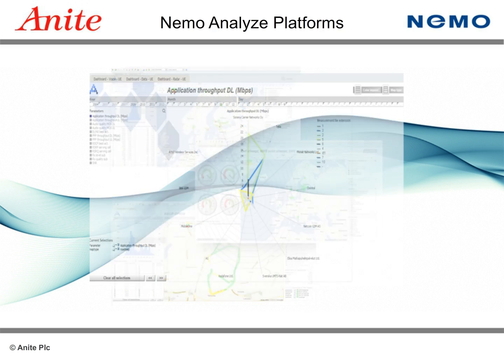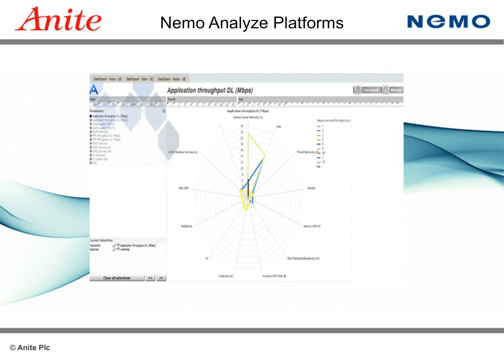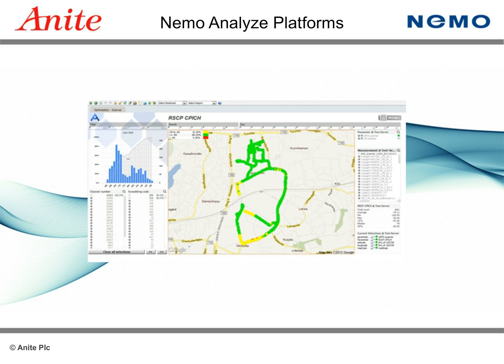The NEMO Analyze Snapshot version is a web interface used to provide dashboard views, reporting, optimization, and troubleshooting over vast data sets. This solution utilizes the same database server as a NEMO Analyze Enterprise solution to load and store the raw measurement data. Data can be loaded directly or via FTP server. The data is then pre-processed and loaded for easy viewing via the web-based user interface, which can be accessed from any location without requiring any software to be loaded on the client machine.